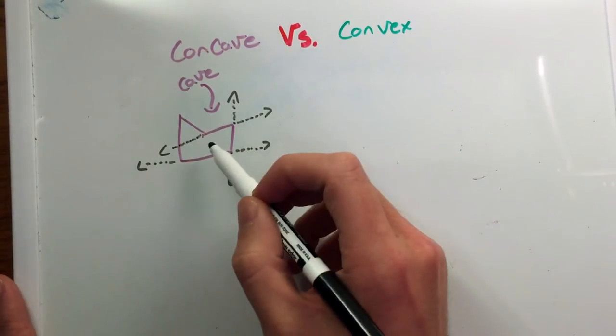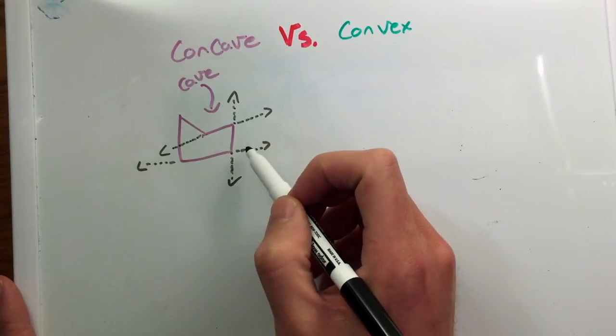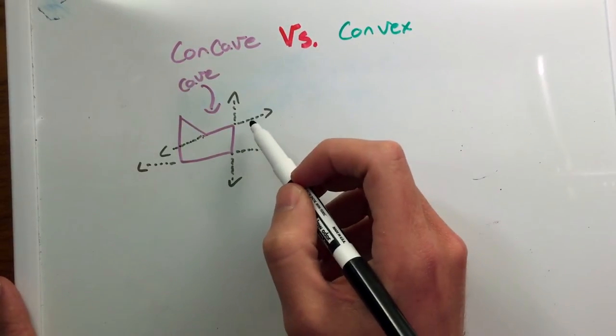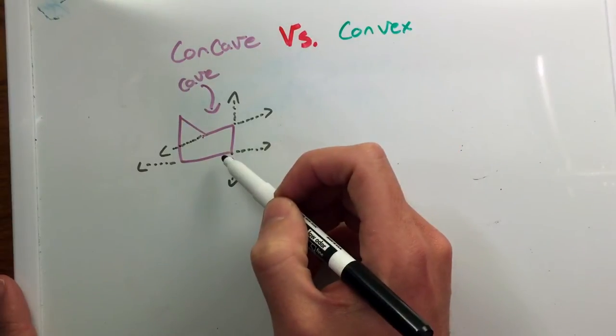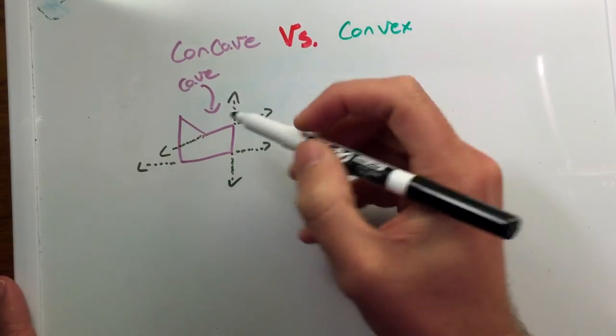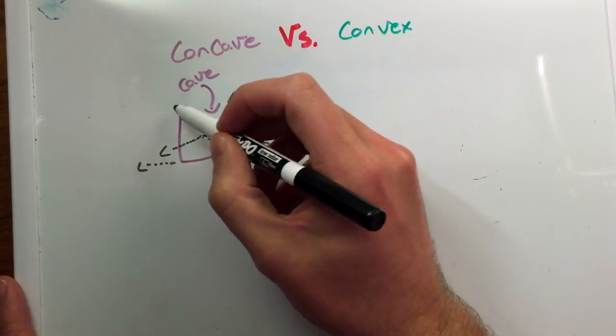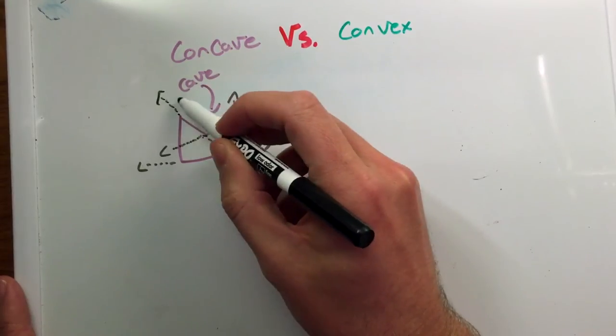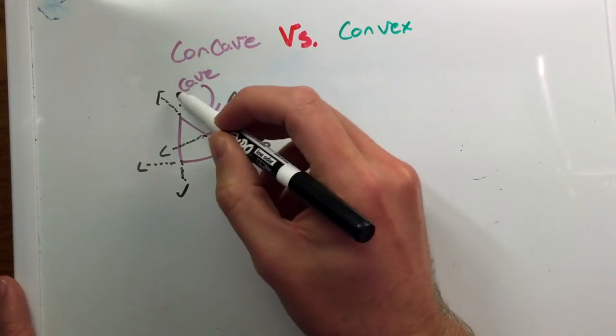At that point, I know this is a concave polygon, because if I extend at least one of the segments and it goes inside of the polygon, then it's a concave polygon. So I can keep drawing this. Oh look, it fails again. And then here, it doesn't fail. It passes our little concave test.